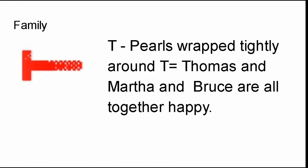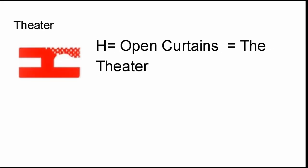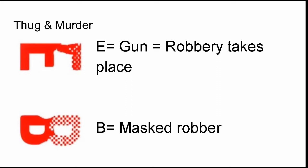So T — pearls wrapped tightly around T — equals Thomas, Martha, and Bruce all together happy. Then you go to H, the theater. H equals open curtains, the theater. That's where they basically get to go out and watch a movie together on that fateful night. Thug and murder: E equals gun, equals robbery takes place. And then B equals masked robber. B is the key to all this, because once I flipped it on its left, you could see the mask. And the mask is the main key in all this.